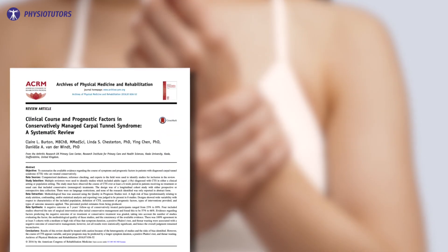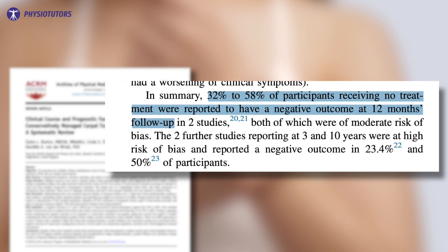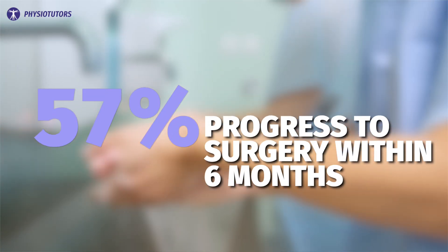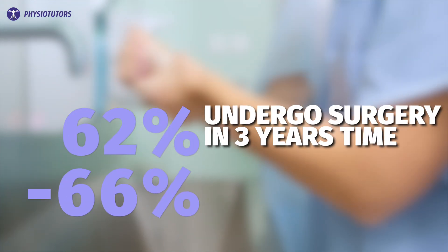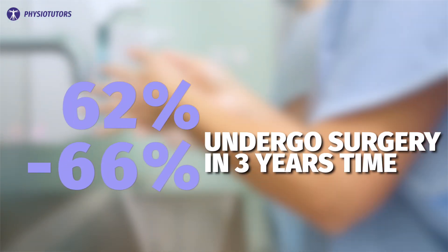A review by Burton et al. in 2016 showed that 28 to 62 percent of patients recover without intervention, while 32 to 58 percent deteriorate. In patients following conservative treatment, 57 percent progress to surgery within six months, and 62 to 66 percent undergo surgery within three years. This is not exactly a very positive outlook for patients suffering from CTS, so let's look at evidence-based options to improve conservative rehab.